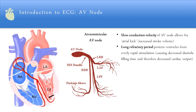With the AV node having slow conduction and a long refractory period, you can over-stimulate the left bundle branch and the right bundle branch. And then the left bundle branch divides into the left posterior fascicle.